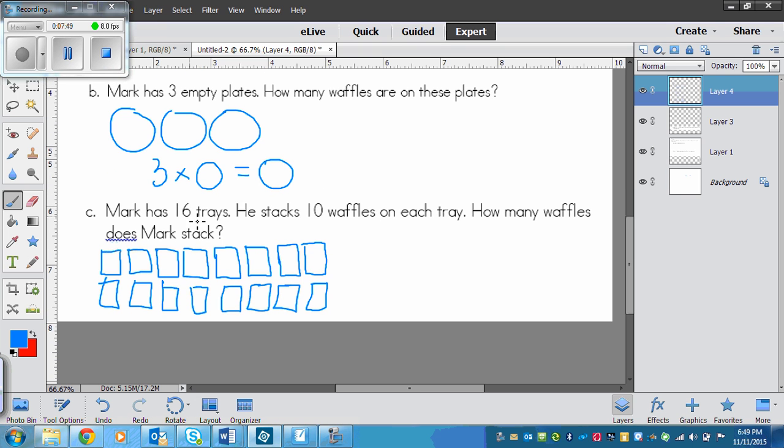And the last one, Mark has 16 trays. He stacks 10 waffles on each tray. How many waffles does Mark stack? So we would write, we could have 10 on each one of these, and we continue that. But it would take more time to add this than it would to use our multiplication fact. So we know our two numbers are 16 and 10. So we go 16 times 10. And remember, our rule with multiplying by 10 is take the other factor and put a zero after it. So 16 and a zero after it equals 160.